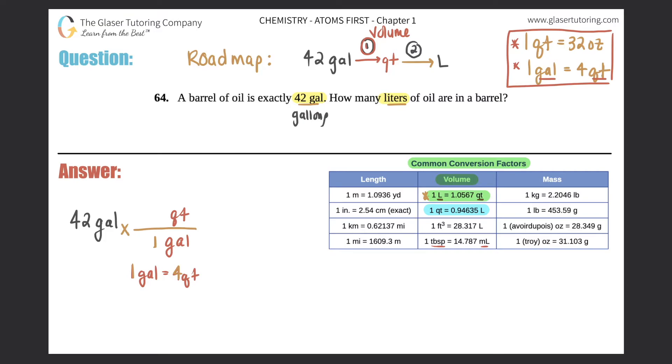So one gallon and the four has to go with the four quarts. And now the word gallon cancels out because anything that's the same on the top and the bottom will always cancel. And now you're just working with quarts, so this is your first step - this guy is checked off.